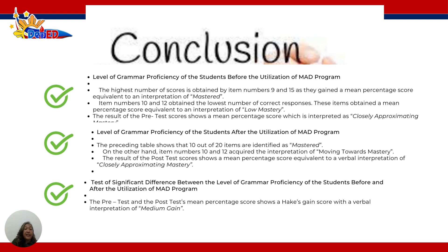Based on the gathered data, under the level of grammar proficiency before the utilization of the MAD program, two items obtained the highest score equivalent to a verbal interpretation of mastery, while two items obtained the lowest score equivalent to a verbal interpretation of low mastery. After the utilization of the MAD program, 10 items obtained the highest score with a verbal interpretation of mastered, while two items obtained the lowest score with a verbal interpretation of moving towards mastery. The results obtained a Hays gain of 0.37, interpreted as medium gain.